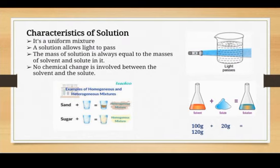For example, if we have 100 grams of solvent and 20 grams of solute, after mixing the total mass becomes 120 grams. This equals the sum before making the solution — 100 plus 20 equals 120 — so the masses are the same before and after making the solution.